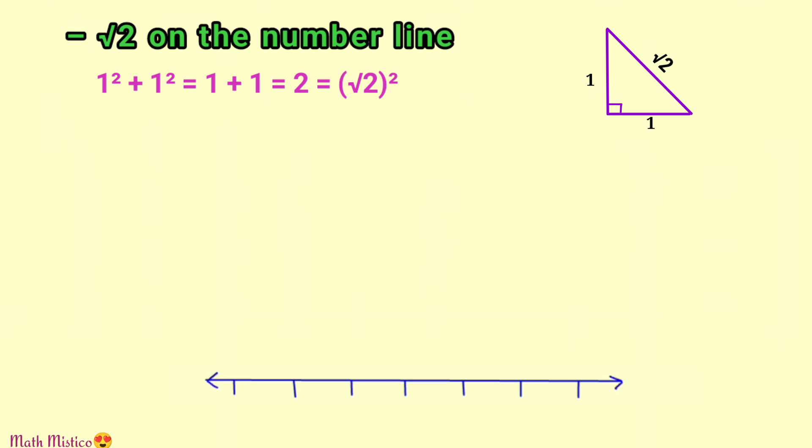As the number we are representing here is a negative number, it will lie to the left of zero. So we will show mostly the negative side of the number line. Let's mark this point as 1, then 0, minus 1, minus 2, minus 3, and so on.